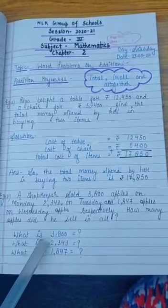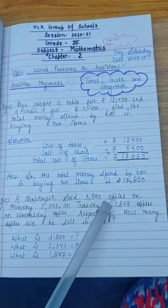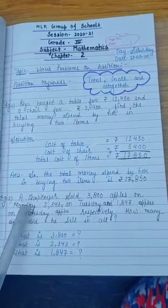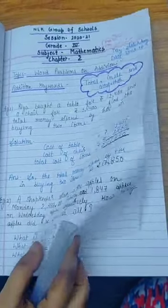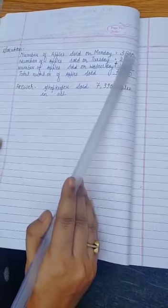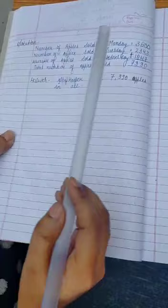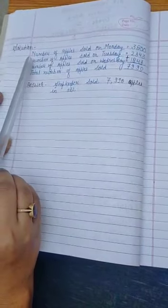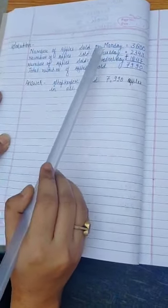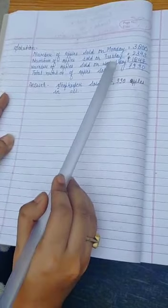What is 3,800? 3,800 is the number of apples sold on Monday, so we write: number of apples sold on Monday is equal to 3,800. What is 2,343? 2,343 is the number of apples sold on Tuesday. And what is 1,847? 1,847 is the number of apples sold on Wednesday.